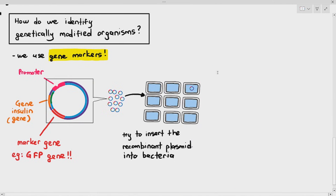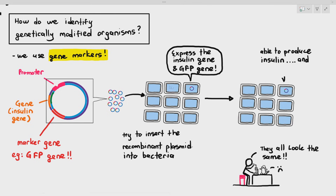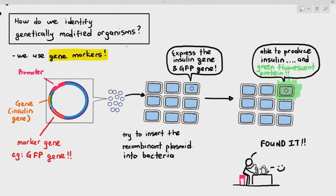When we insert the recombinant plasmid — which has the promoter, the insulin gene, and the marker gene (the GFP gene) — into the bacteria, one of the bacterium takes up the plasmid. This bacterium is able to express not only the insulin gene but also the GFP gene. So when you look at it under the microscope, you will notice this bacterium produces insulin proteins and also the green fluorescent protein. Therefore, it is able to glow, and you are able to distinguish it from all the other non-genetically-modified bacteria — found it!